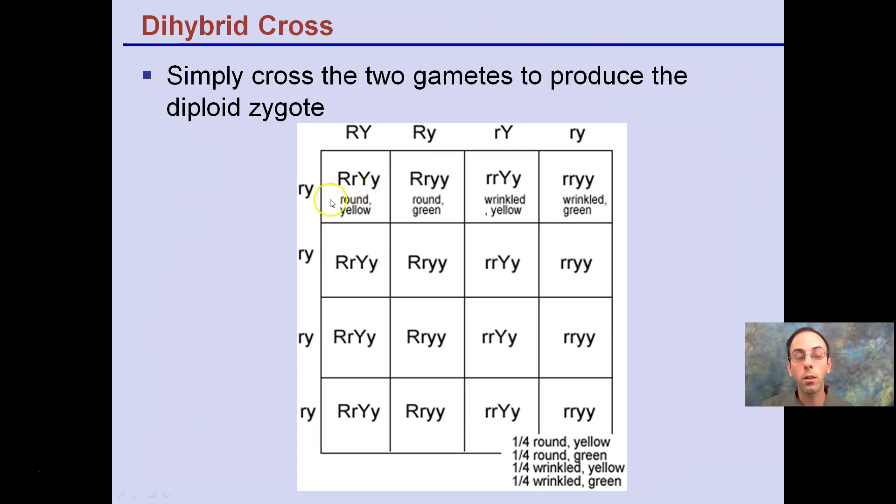If we go back and look that would stand for round and yellow. This would be the phenotype because round is dominant and yellow is dominant. And we notice that carry through throughout the same here.